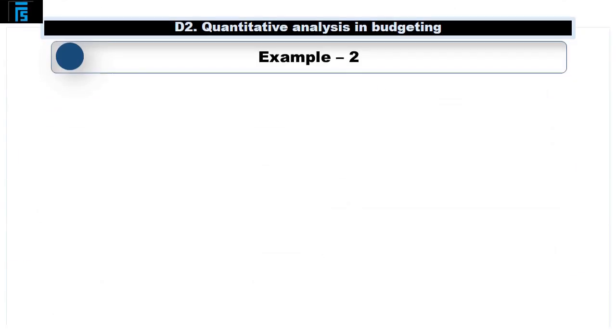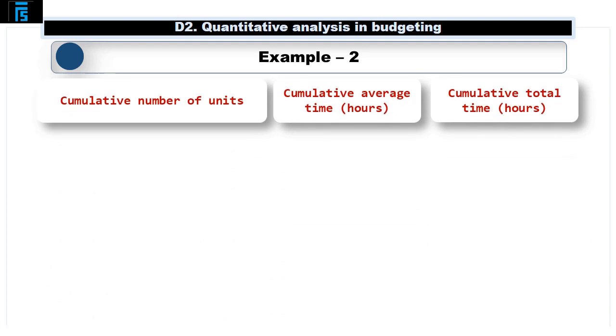Let's continue with this simple example to demonstrate how the learning curve effect would work as production volumes increase. So, if it takes 500 hours to make 100 units and the learning curve effect is 80%, how long does it take to make 800 units? The easiest way to approach this is to put together a table where we will record the cumulative number of units in the left-hand column, the cumulative average time taken to make those units in the middle column, and the cumulative total time taken to make all units in the right-hand column. The starting point in this example is the initial batch of 100 units that took a total of 500 hours to make, so 5 hours each.